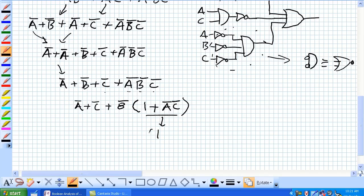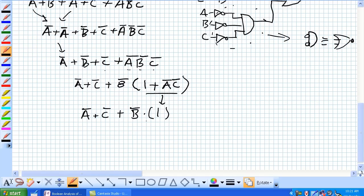OR with 1 is always equal to 1. Now, anything ANDed with 1 is always equal to what the original variable is. And this is our simplified equation.